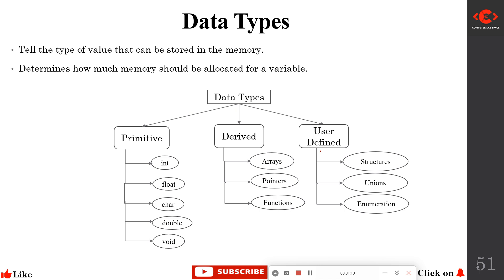User-defined data types, as the name indicates, are defined by the user using an identifier that acts as a data type, based on an existing primitive data type. This includes structures, unions, and enumerations. For derived and user-defined data types — arrays, pointers, functions, structures, unions, enumerations — I am going to explain each topic in a different upcoming video.